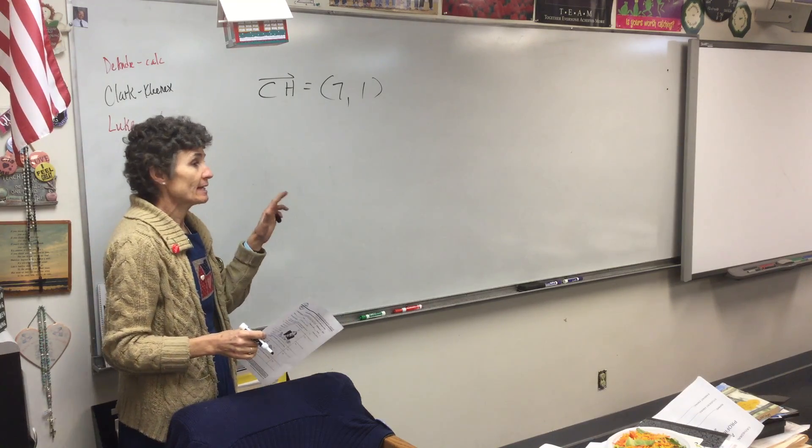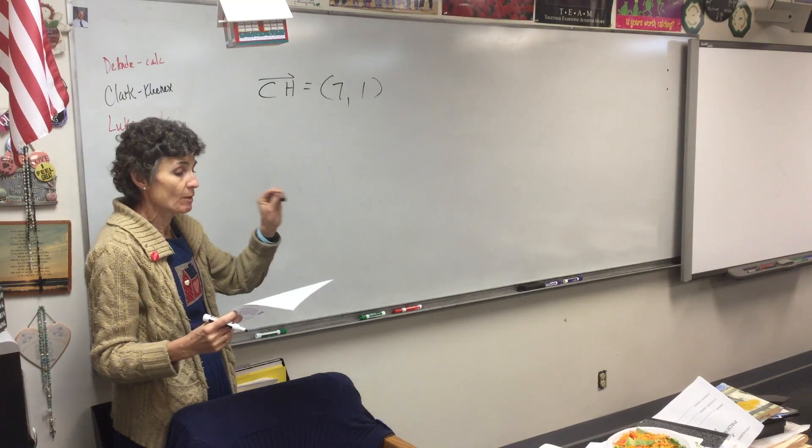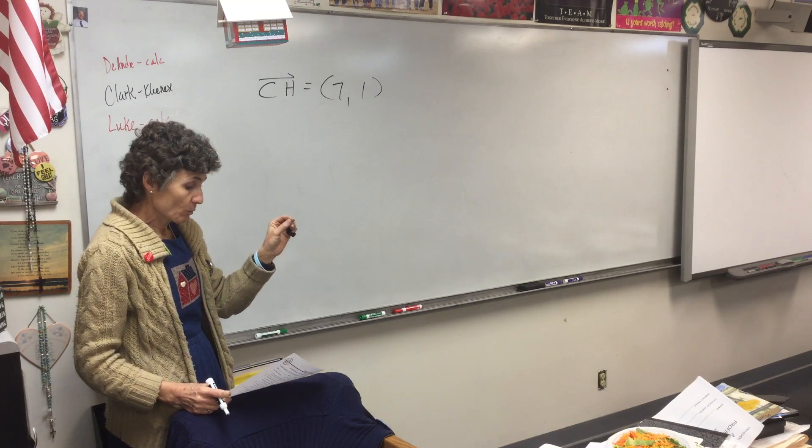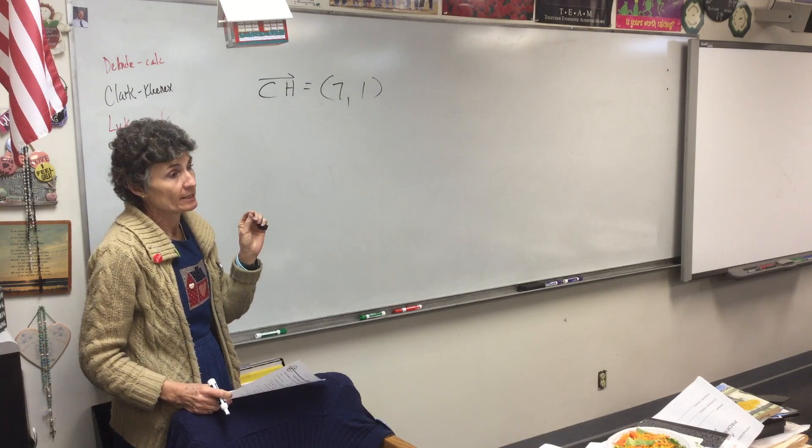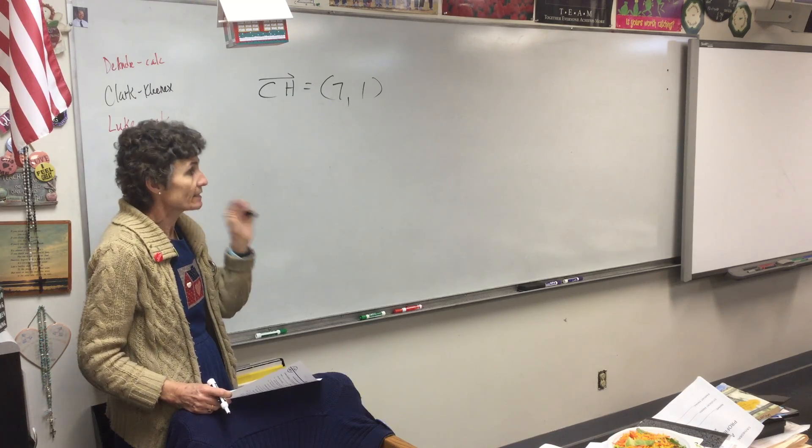If you're not getting this, you are way overthinking it. We are starting at negative three and walking to four. That's seven steps. If we're starting at one and walking to two, that is one step. I mean, that's what it is. It's the directed distance.